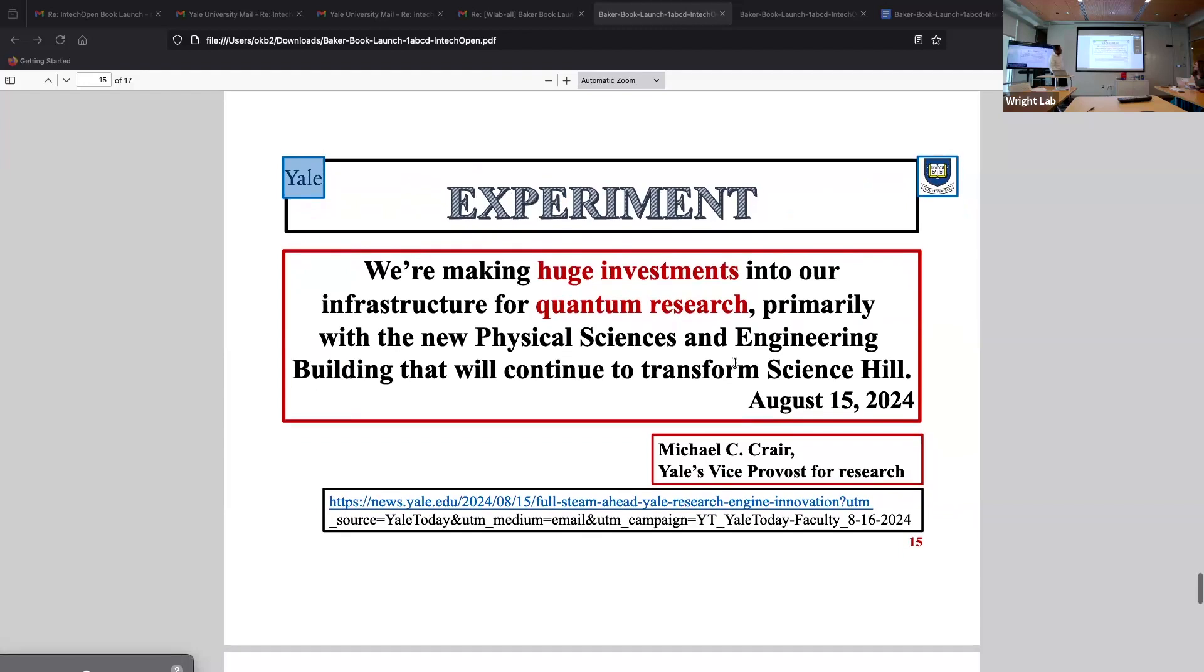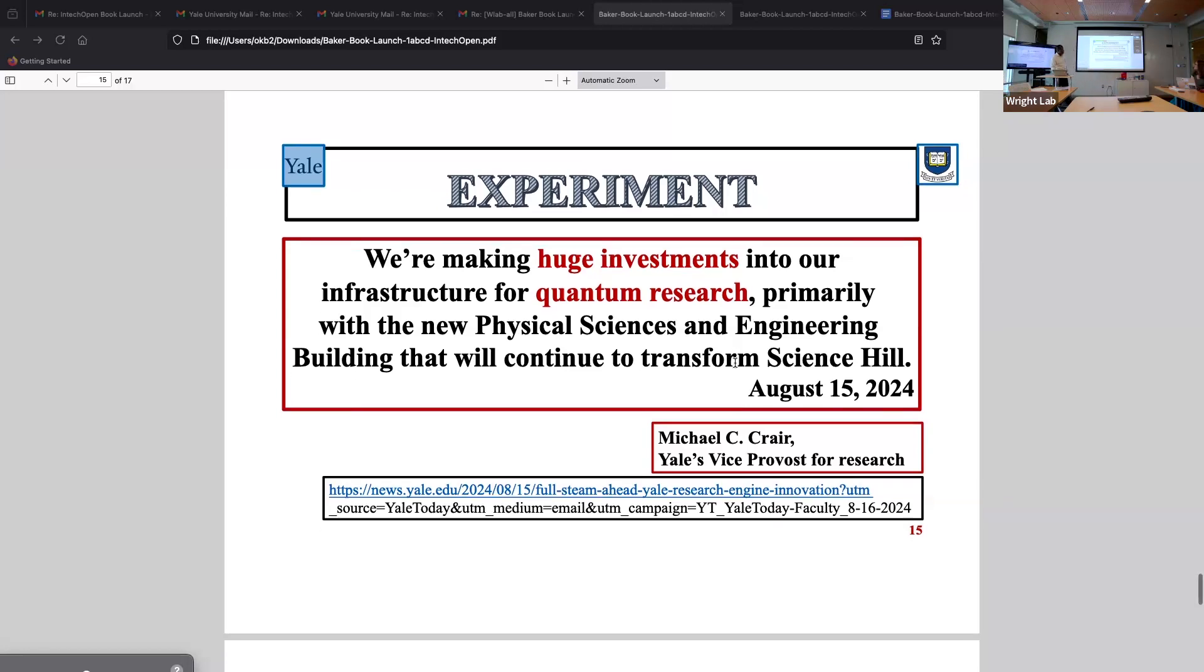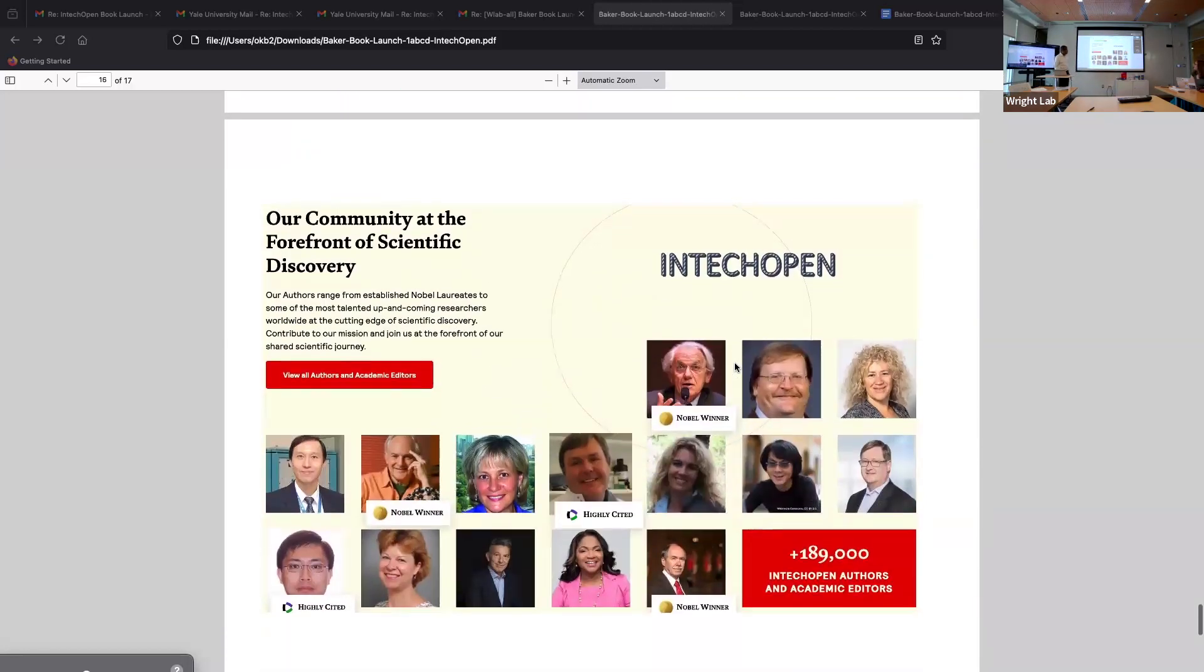Okay. Now toward the end, I'll make this point. Yale University seems to enjoy this. Steve and some others here will probably go with this. So, this is from our vice provost for research, Michael Crair, about, we are making huge investments into our infrastructure for quantum research, primarily with the new physical science and engineering building that will continue to transform science at Yale. And you can read this by going through this site if you want to. So this is a big deal. And this is IntechOpen.